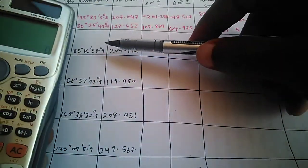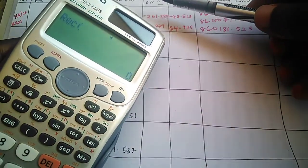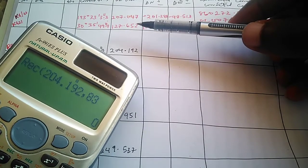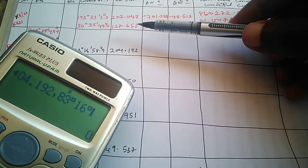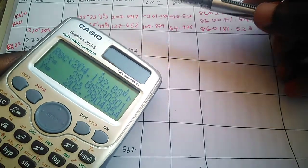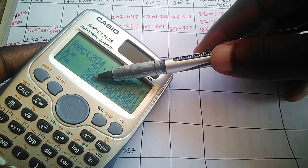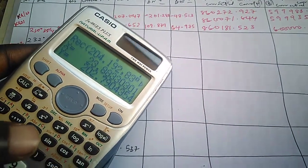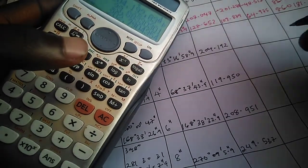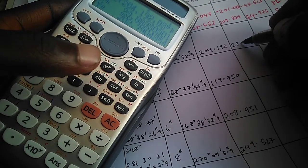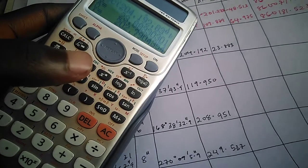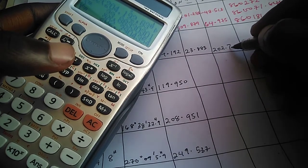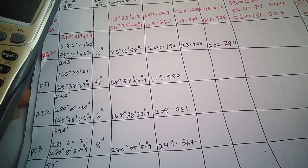For our first line, we have a distance of 204.192. We enter 204.192, comma, and the bearing is 83 degrees 16 minutes 58.9 seconds. The X value represents northing and Y represents easting. So our delta northing here is 23.883 and our delta easting is 202.790. That's for the first line.